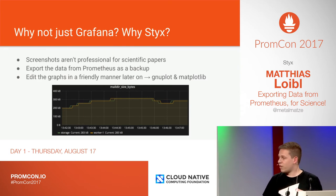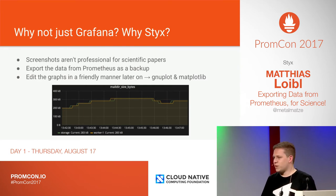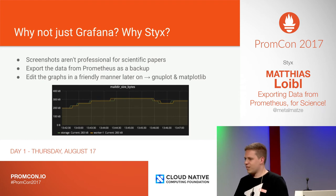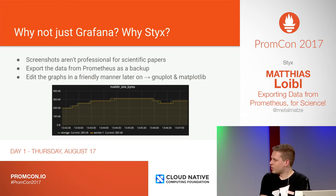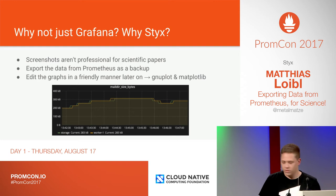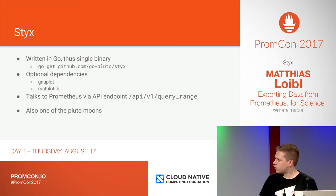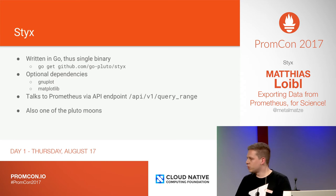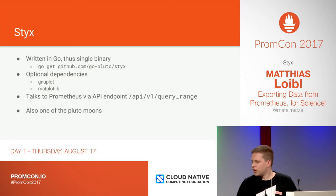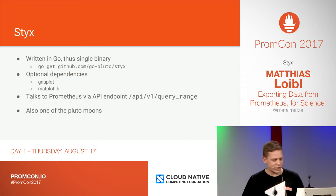So why not just Grafana? Why Styx? Well, screenshots in our scientific paper aren't that great. We want to have something that looks a bit more professional. That's basically why we are building Styx. It's written in Go, so you can just go get it from GitHub. There are optional dependencies: gnuplot and matplotlib. It talks to the query range endpoint, and Styx is also one of the moons of Pluto — that's the connection.